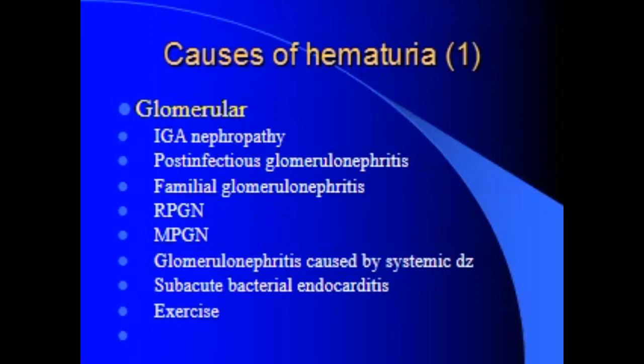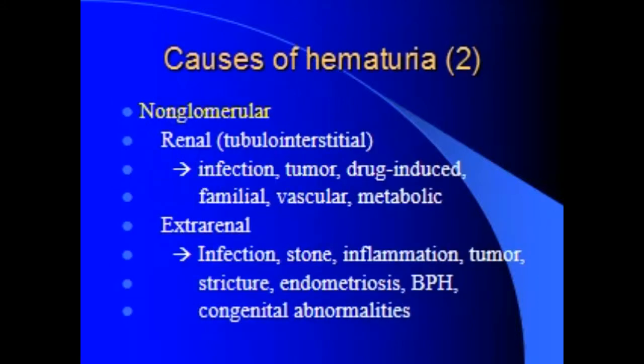Causes of hematuria – Glomerular: Post-infectious glomerulonephritis, familial glomerulonephritis, IgA nephropathy, MPGN glomerulonephritis, and causes related to systemic disease such as subacute bacterial endocarditis and exercise.